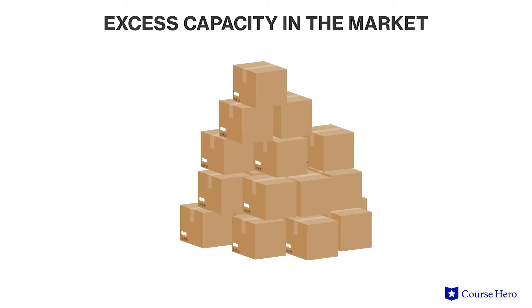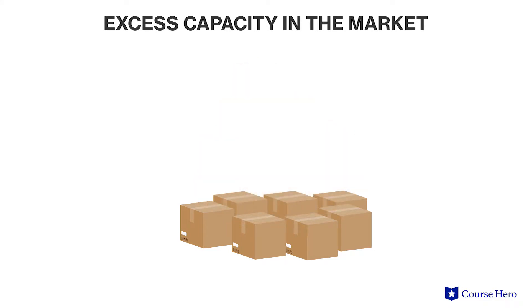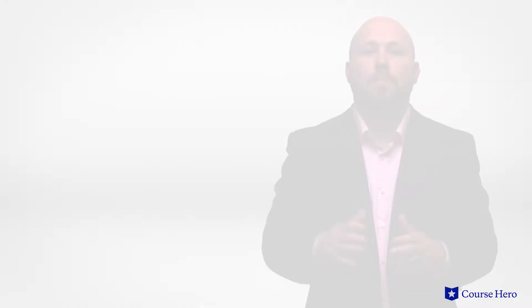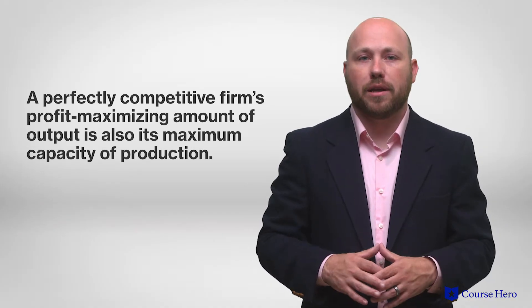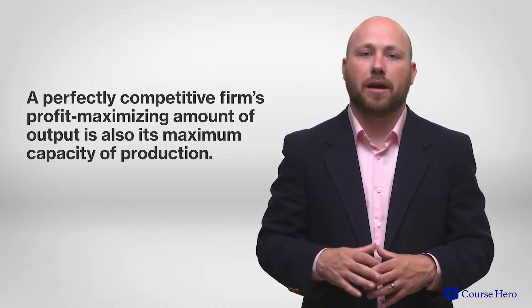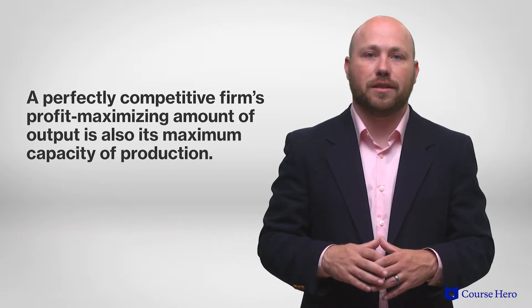Because the monopolist reduces output and raises the market price compared to what we see under perfect competition, the economy has less activity than is efficient. There is excess capacity in the market — sometimes the monopolist could produce more but chooses not to because its profit-maximizing amount of output is below its maximum capacity. By comparison, a perfectly competitive firm's profit-maximizing amount of output is also its maximum capacity of production, and at the market price it can sell all it can produce.